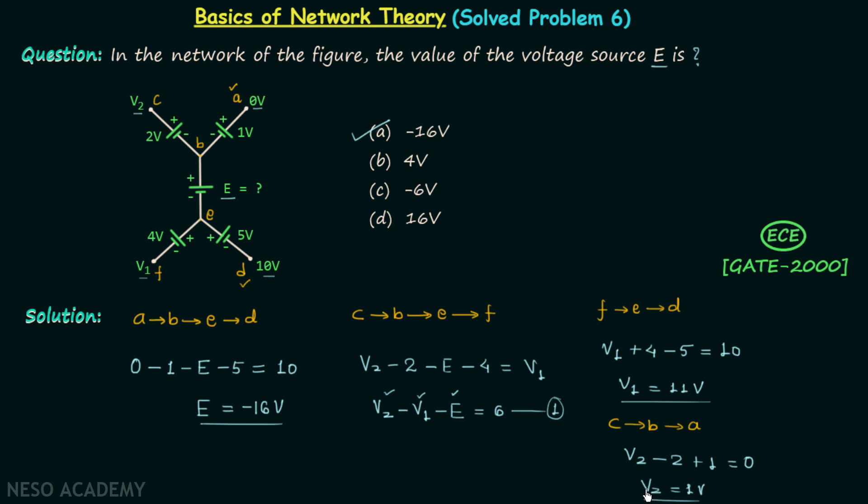So in this way we have calculated V1 and V2. We will put V1 equal to 11 volts and V2 equal to 1 volt in equation number 1, and this will give us 1 minus 11 minus E equal to 6. From here we will get E equal to minus 16 volts.